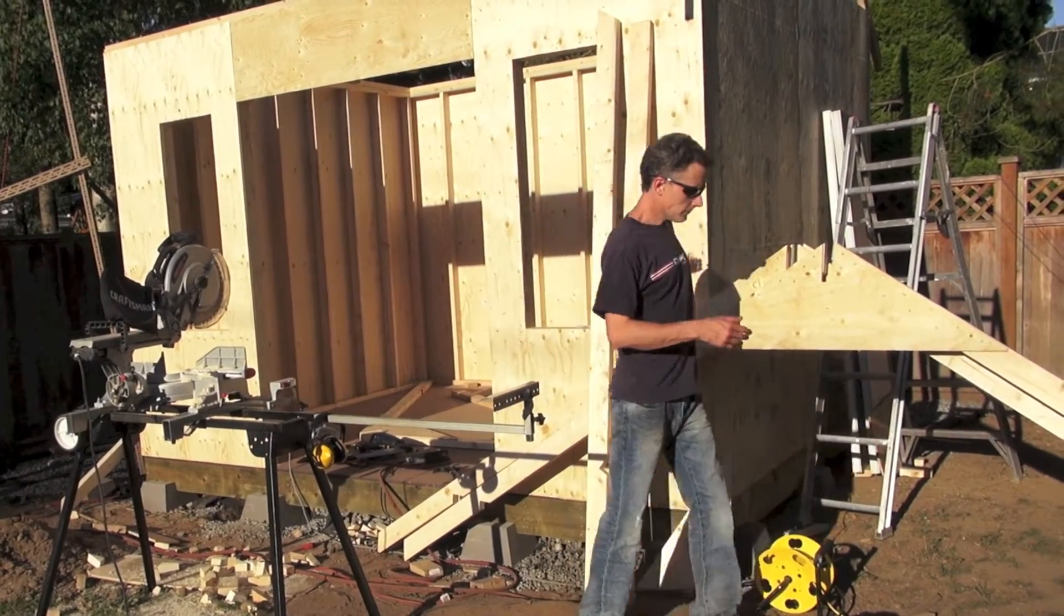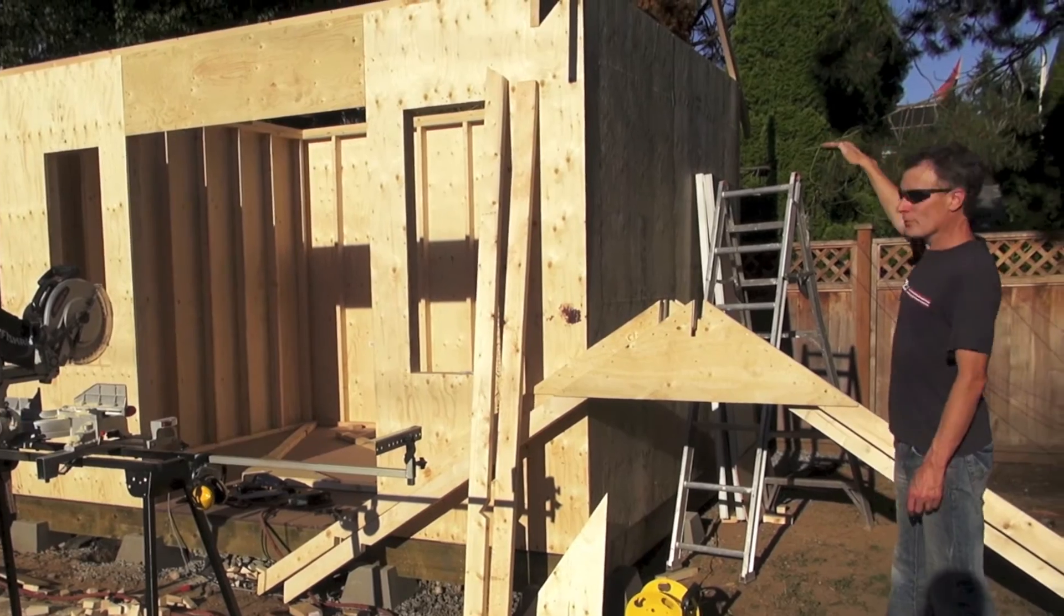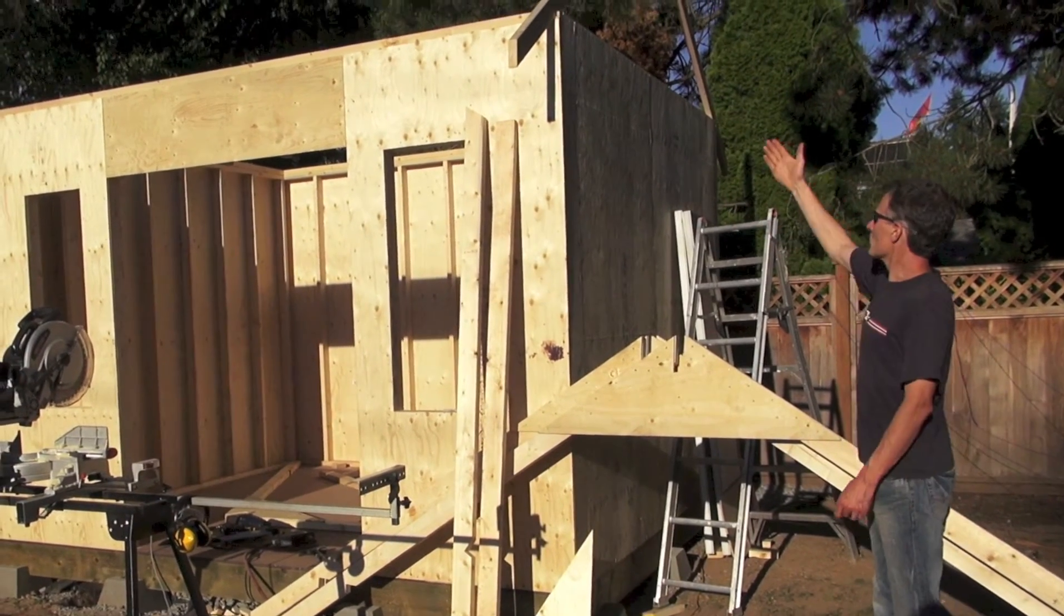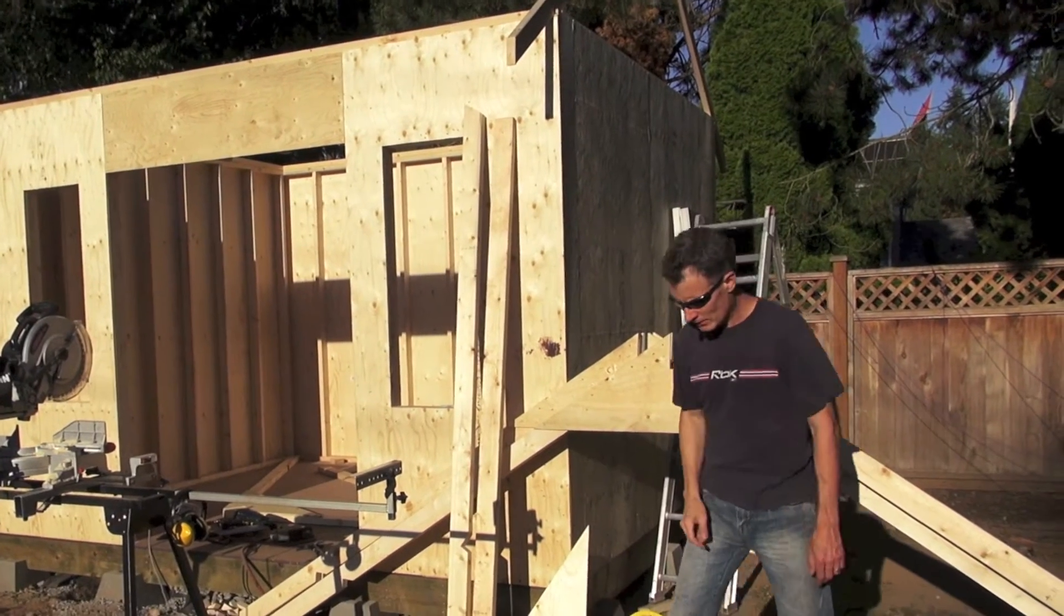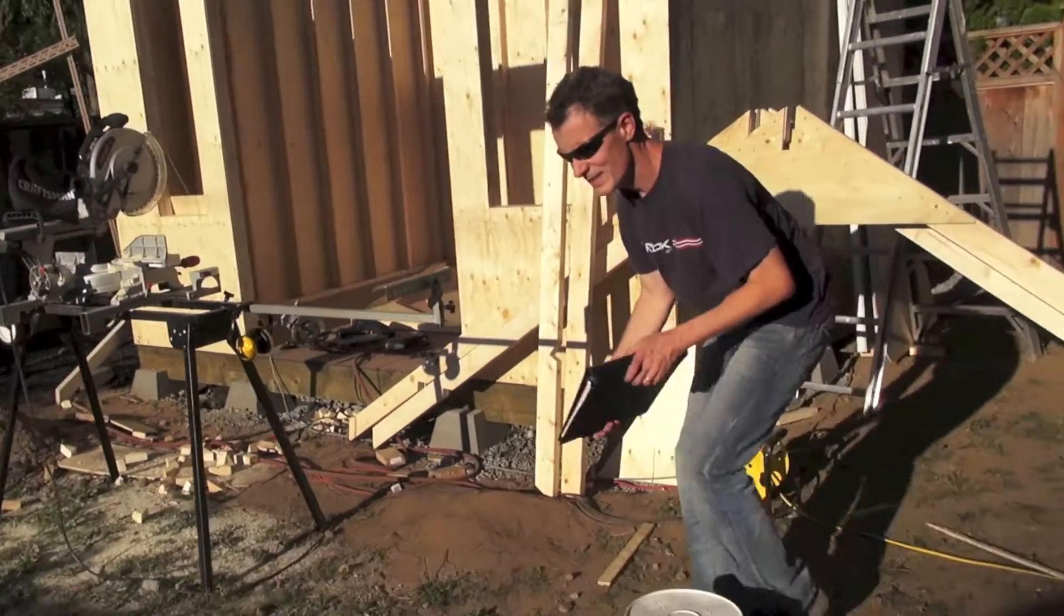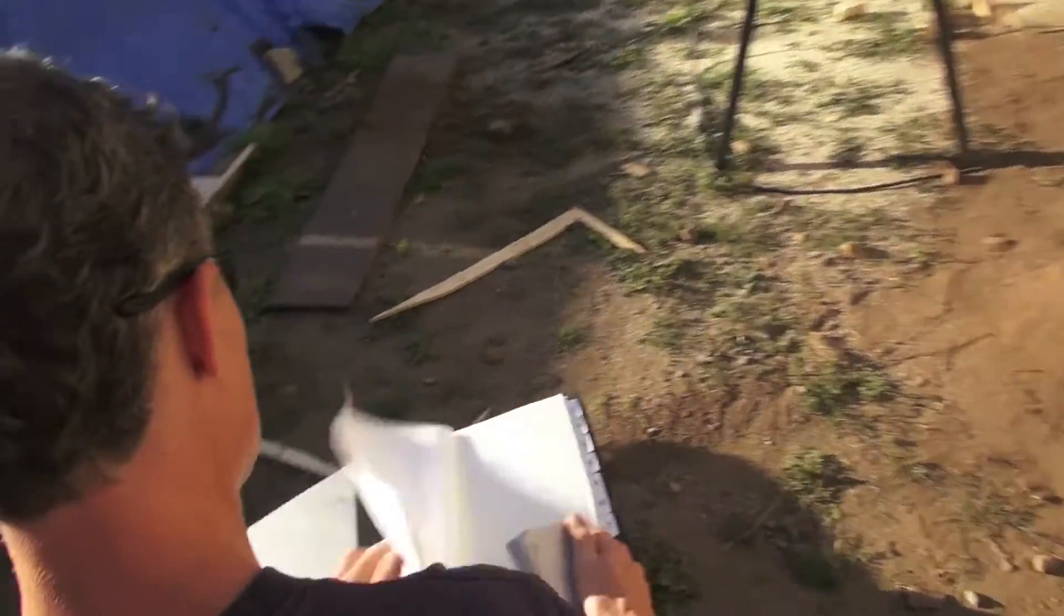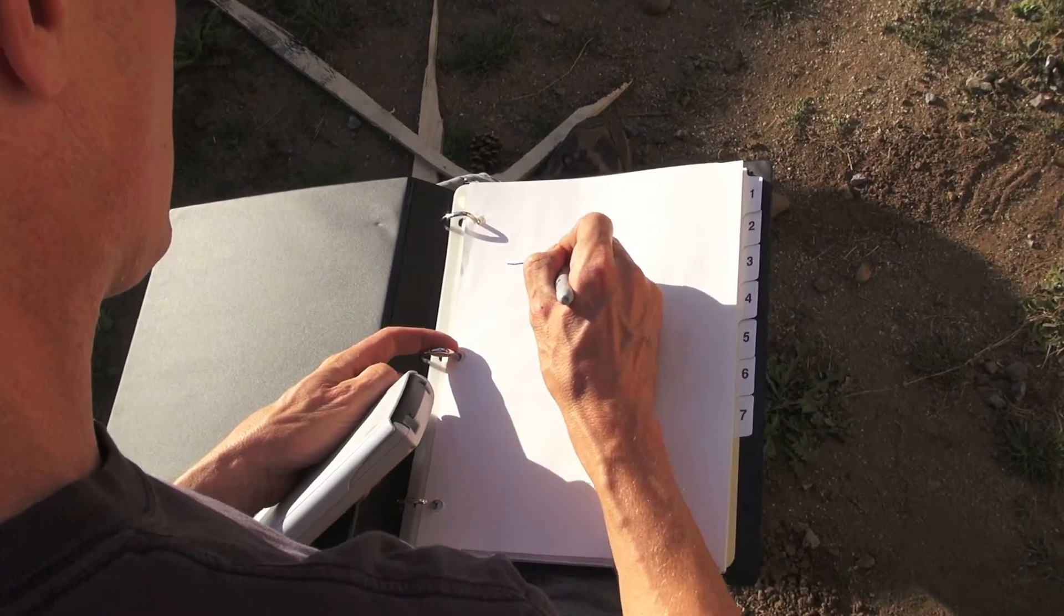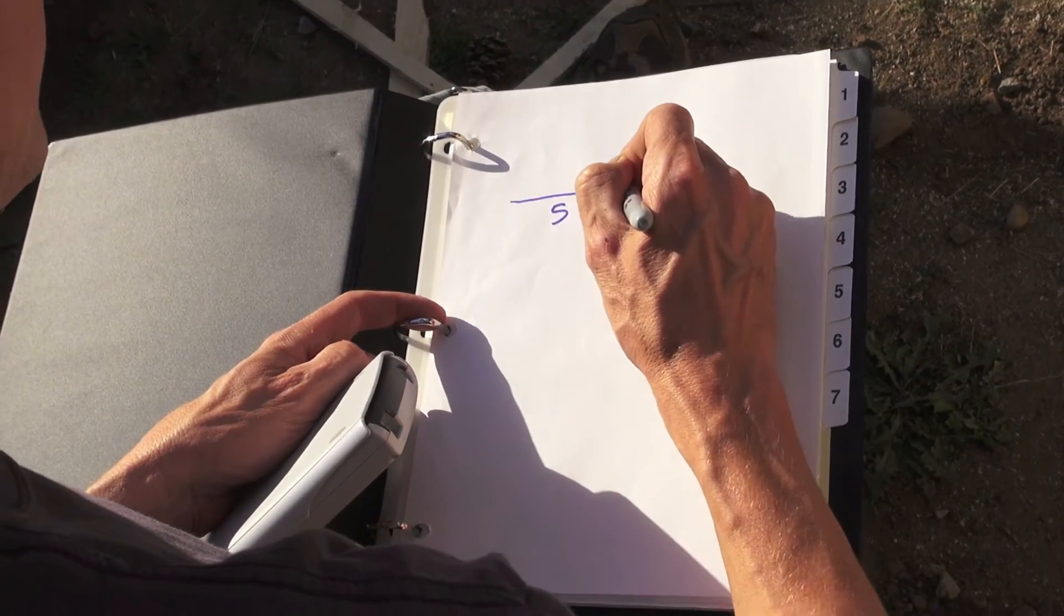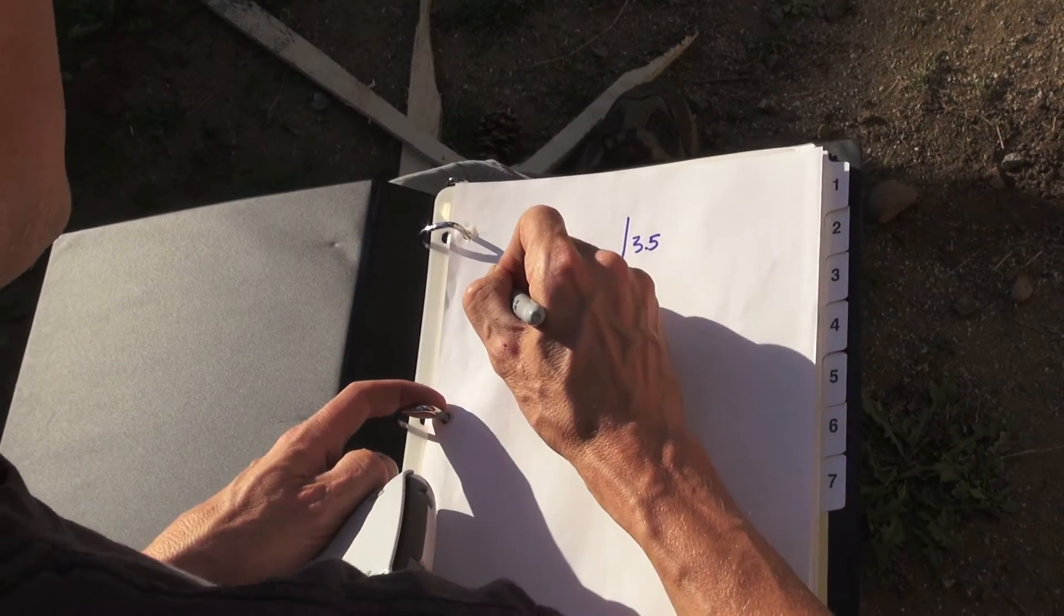I know that my roof has a pitch with a rise of 3.5 and a run of 5 feet. I'm going to use those two numbers and find the angle that I need to work with. So I'll draw a little picture here. I have a run of 5 and a rise of 3.5, so I need to know what that angle is.